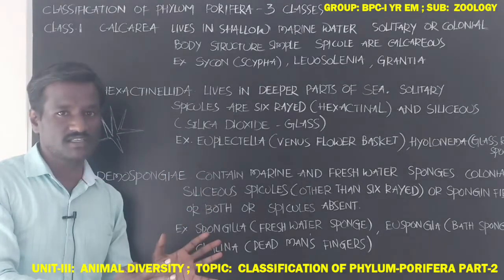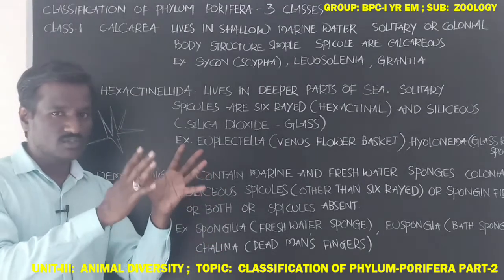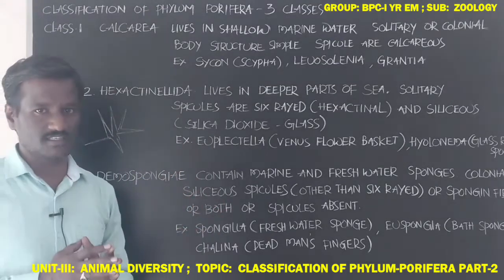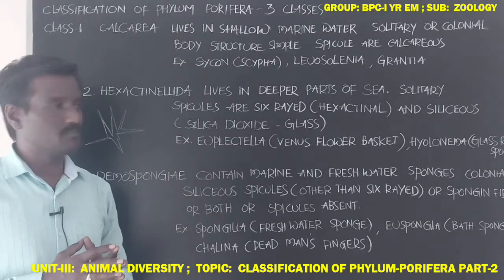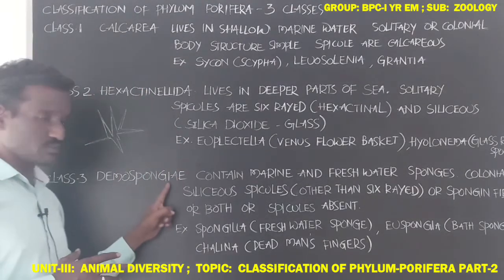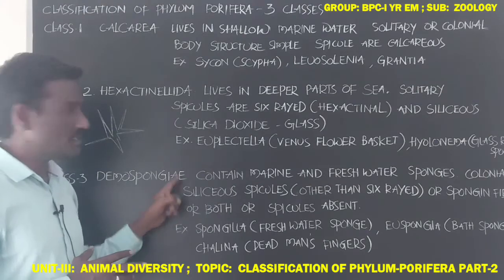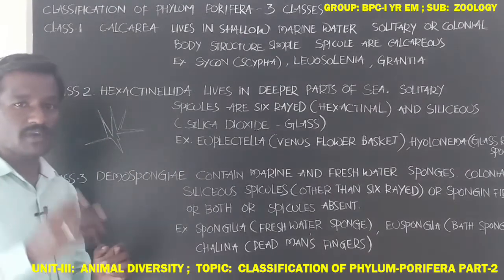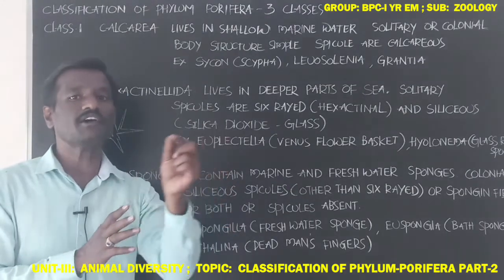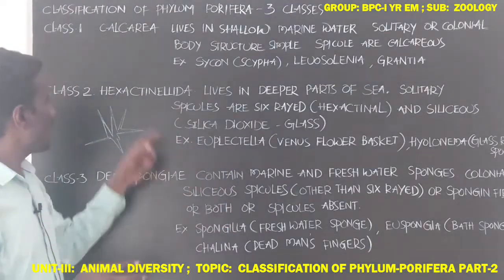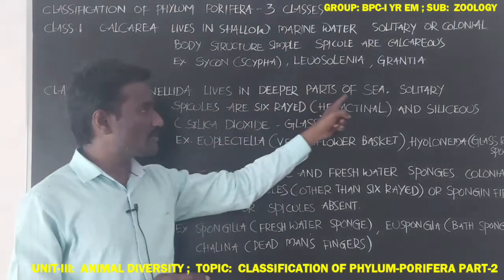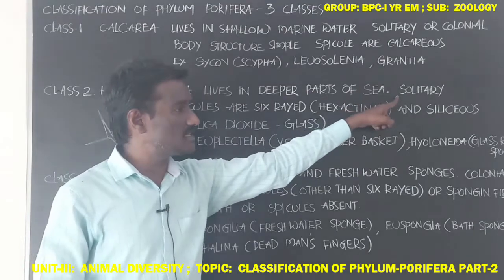Based on the type of spicules present in the body, sponges are differentiated into three classes: Calcarea, Hexactinellida, and Demospongiae. Class 2 Hexactinellida — these sponges live in the deeper part of the sea.